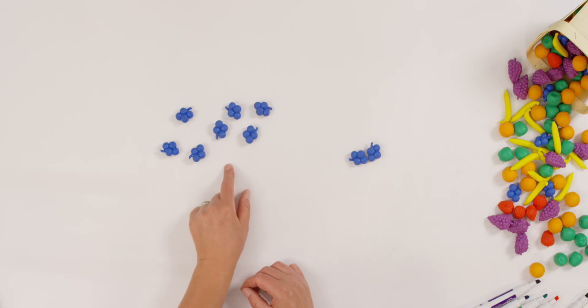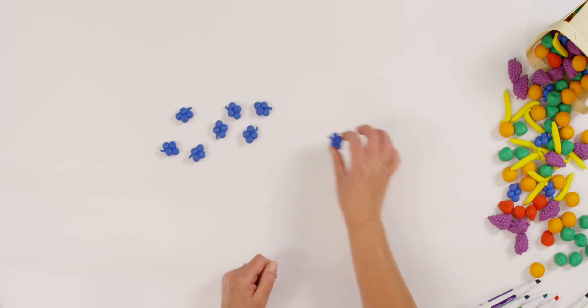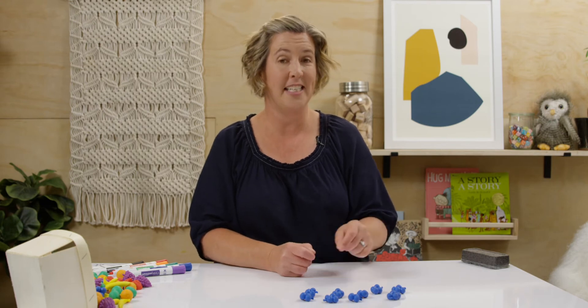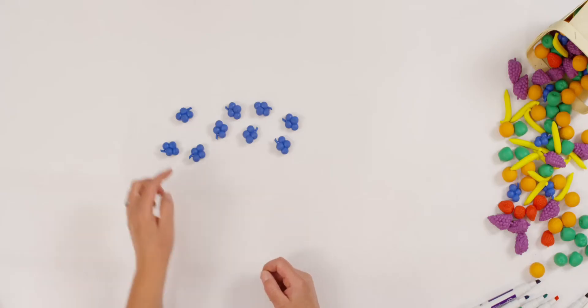How many blueberries did I start with? Seven. Can you get out seven counters? And how many more did I add? Two more. Can you show that too? Now let's count them all together. How much is seven and two?